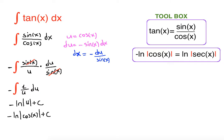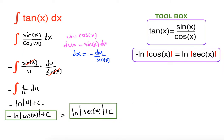This is the final answer. You can leave it as negative ln |cos x| + c, or you can write it in the form ln |secant x| + c. This is because 1 over cosine x equals secant x, so negative ln cosine x equals ln secant x. The negative sign brings cosine upstairs as a positive power, making it secant x. You can use either form.